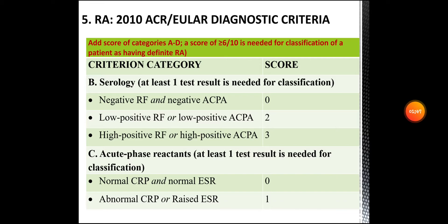The third criterion category is acute phase reactants — at least one test result is needed for classification. Normal C-reactive protein and normal erythrocyte sedimentation rate gives a score of 0. Abnormal C-reactive protein or raised erythrocyte sedimentation rate gives a score of 1.